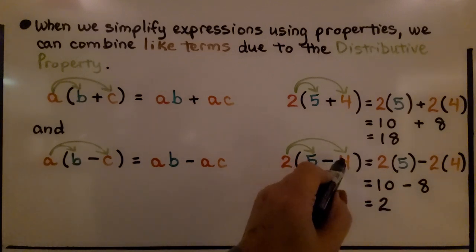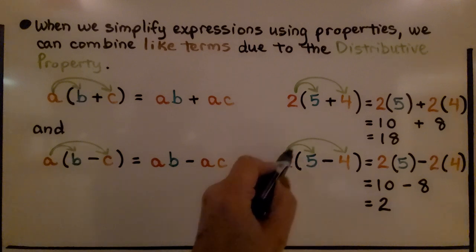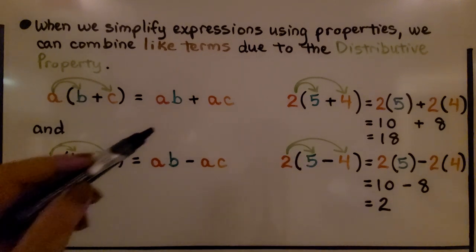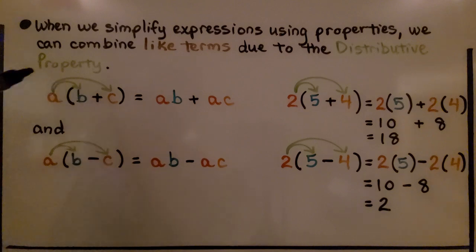And if we did find 5 minus 4, that would be a 1, we'd have 2 times 1, that would be 2. So do you see how we can use the distributive property?